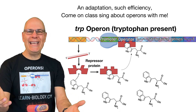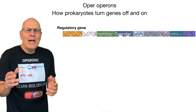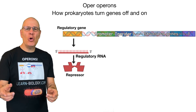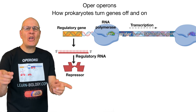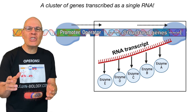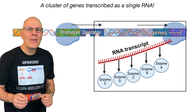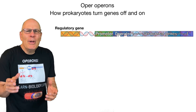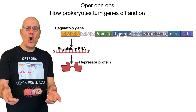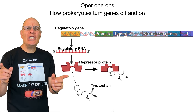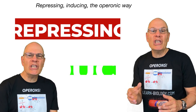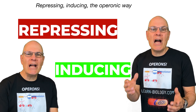Come on class, sing about operons with me! Operons in prokaryotes turn genes off and on — a cluster of genes transcribed as a single RNA. Operons in prokaryotes turn genes off and on — repressing, inducing, the operonic way.